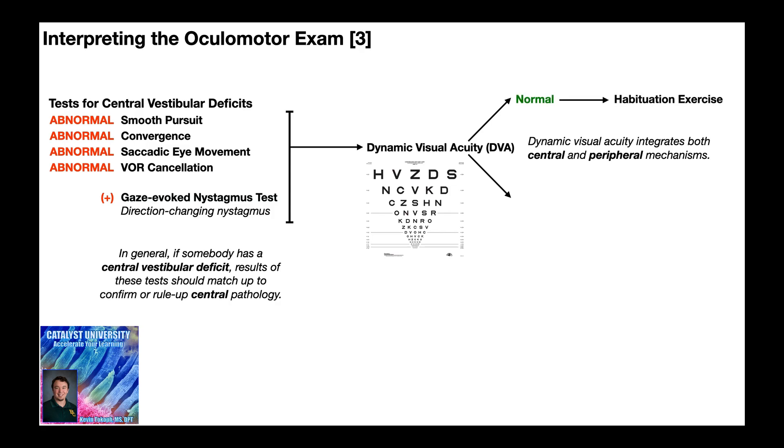So the first result of this could be it's normal. Remember, normal for the DVA would be a two-line difference or less. And so if DVA is normal, then the person likely does not have impaired gaze stabilization. But they still require habituation exercises due to having a central vestibular deficit.